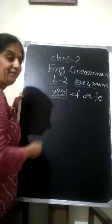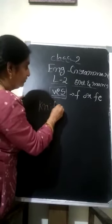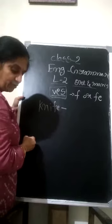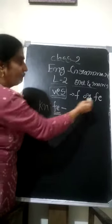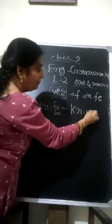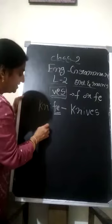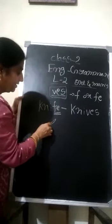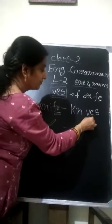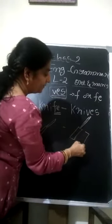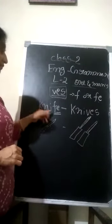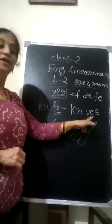For example, what is the spelling of knife? K-N-I-F-E. This word ends with FE. So, we make it plural by adding — K-N-I-V-E-S — knives. This is one knife; this is two knives. Knife ends with FE, and we add VES to make knives.